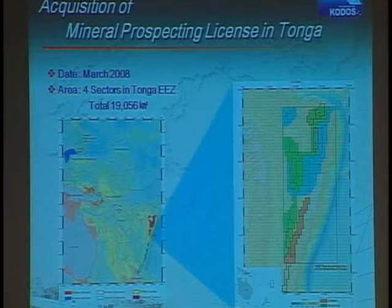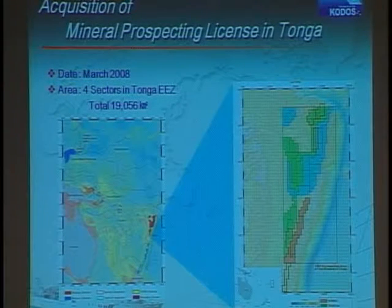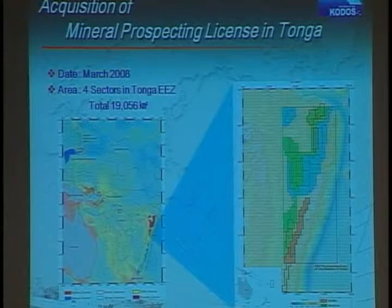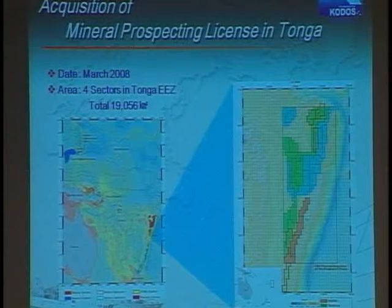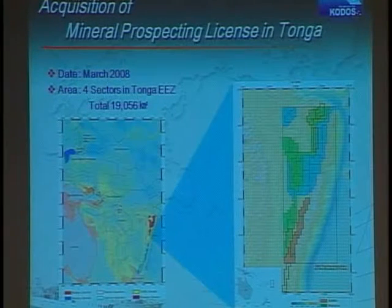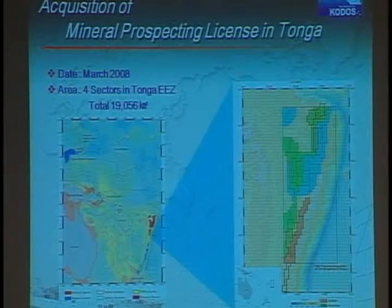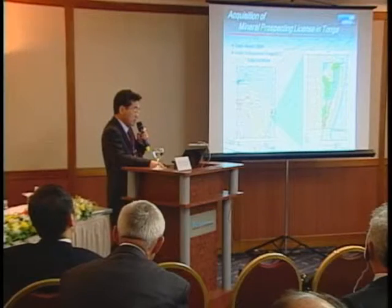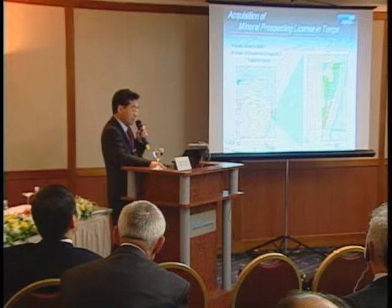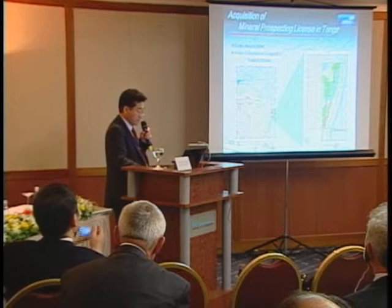Since 2002, field surveys for seafloor massive sulfide have been conducted in the EEZ of Fiji and Tonga. Recently, KORDI acquired a mineral prospecting license for seafloor massive sulfide in an area of about 19,000 square kilometers from the Tonga government in March this year.